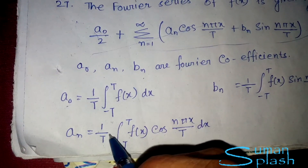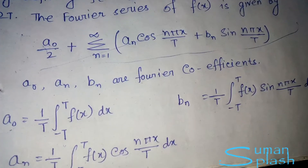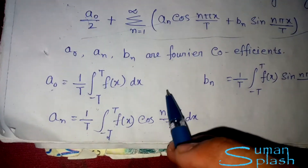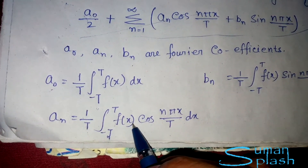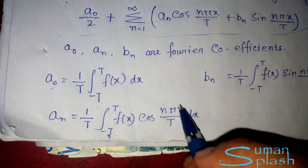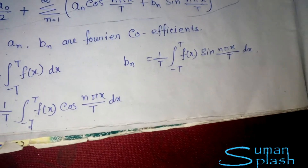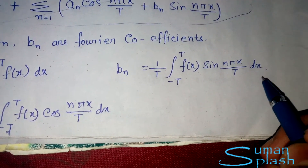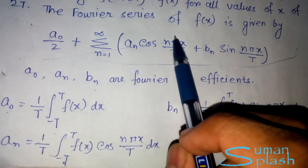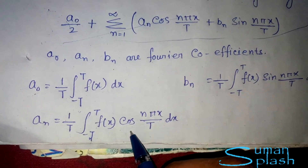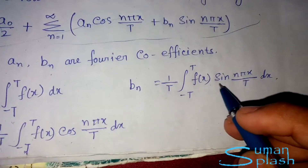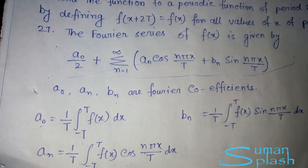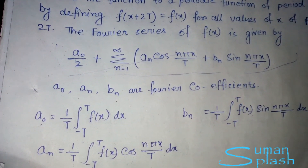You can notice a clear pattern: all three integrals are over −t to t and have a factor of 1/t. For a₀ the integrand is just f(x); for aₙ it is f(x) multiplied by cos(nπx/t); and for bₙ it is f(x) multiplied by sin(nπx/t). Remembering this pattern makes the formulas easy to recall.